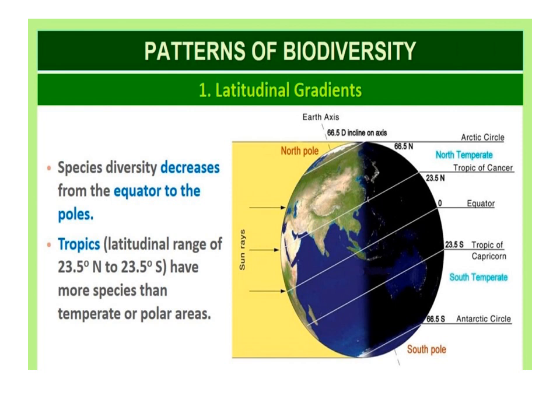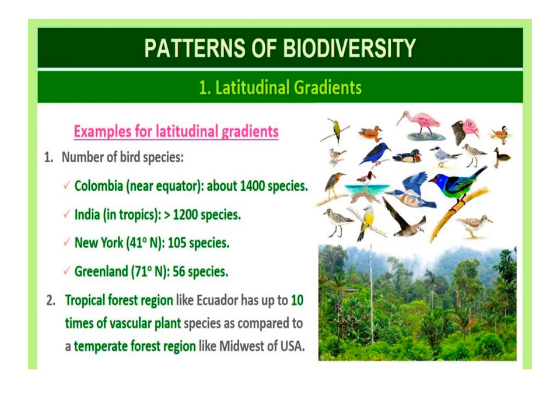Regarding latitudinal gradient, in general species diversity decreases as we move away from the equator towards the poles. With very few exceptions, the tropics — latitude range of 23.5 degrees north to 23.5 degrees south — harbor more species than temperate or polar areas. For example, Colombia located near the equator has nearly 14,000 species of birds, while New York at 41 degrees north has 105 species, and Greenland at 71 degrees north has only 56 species.